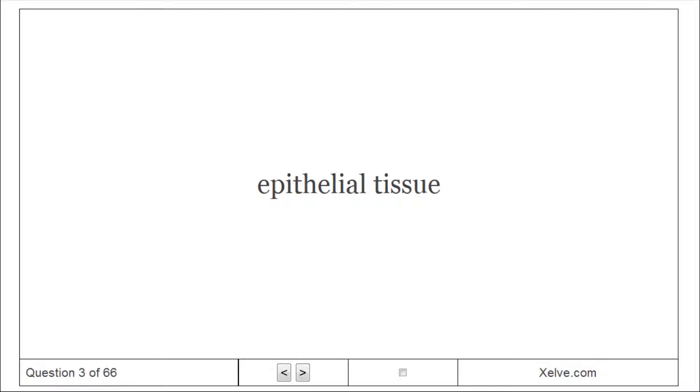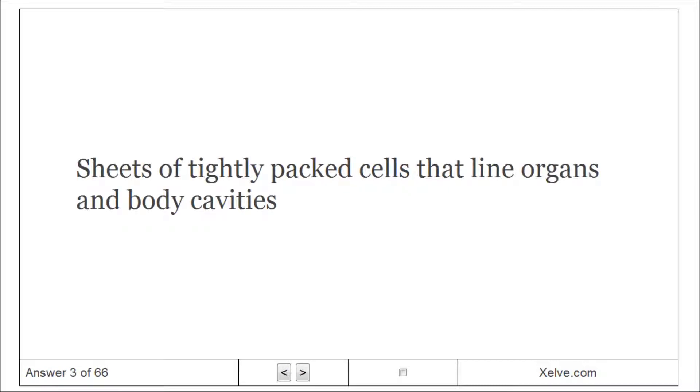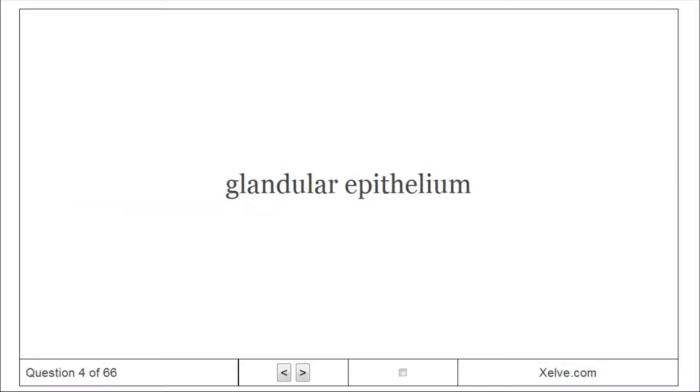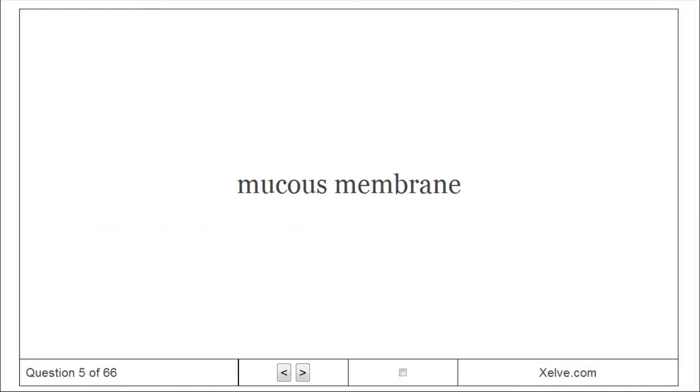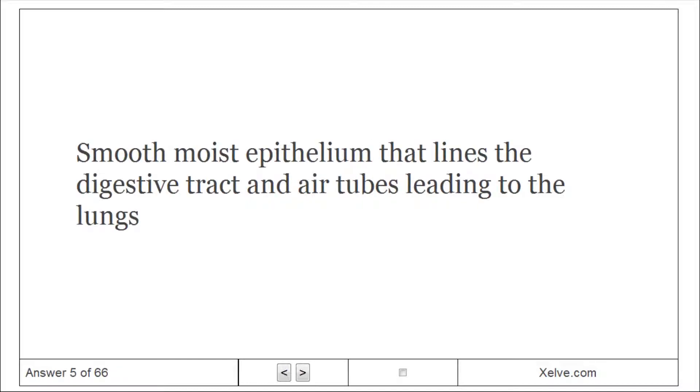Epithelial tissue: Sheets of tightly packed cells that line organs and body cavities. Glandular epithelium: An epithelium that absorbs or secretes chemical solutions. Mucus membrane: Smooth moist epithelium that lines the digestive tract and air tubes leading to the lungs.